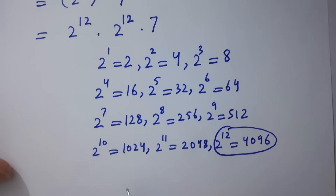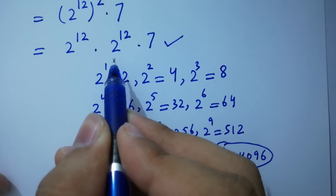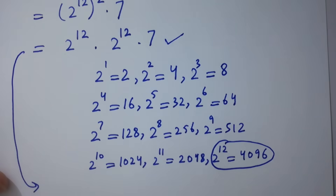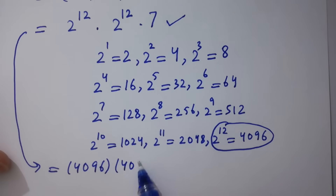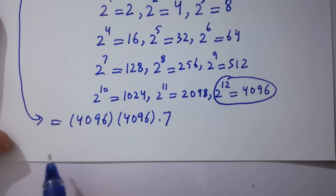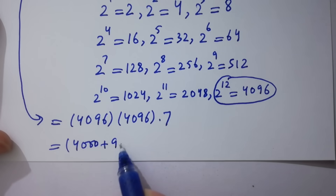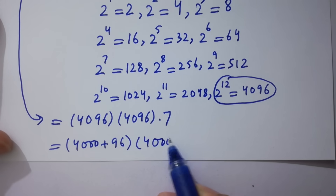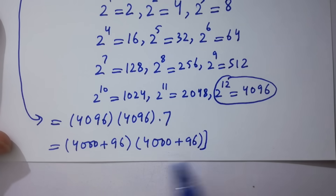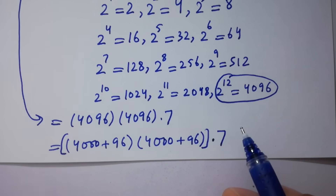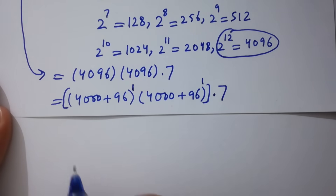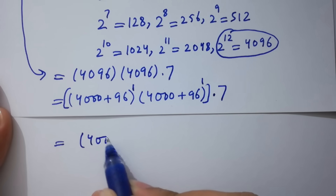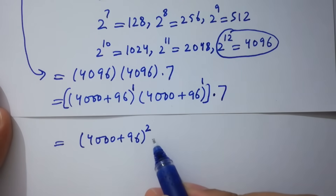It means here, 2 to the power 12 times 2 to the power 12 times 7 is equal to 4096 times 4096 times 7. It can be written as 4000 plus 96, and here 4000 plus 96, times 7. This has power 1 and this also has power 1 — base same, powers add.